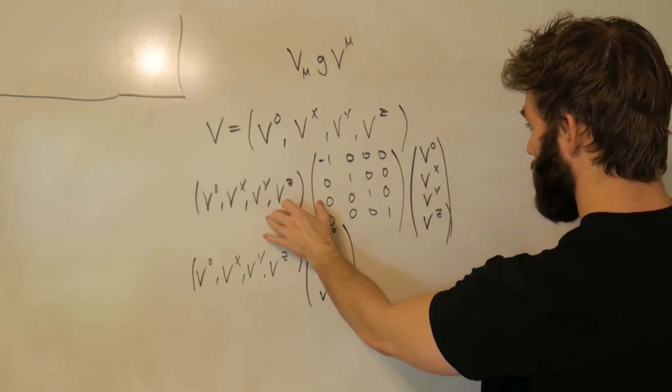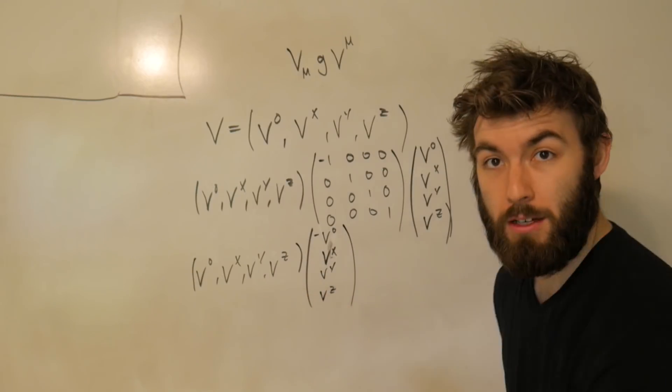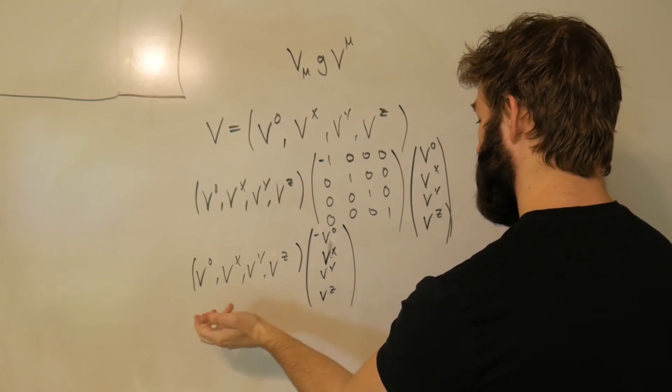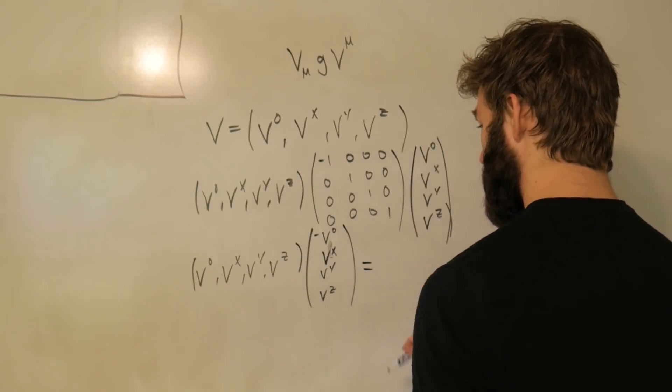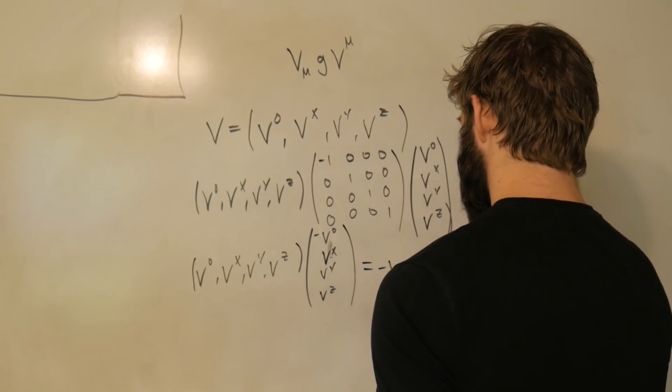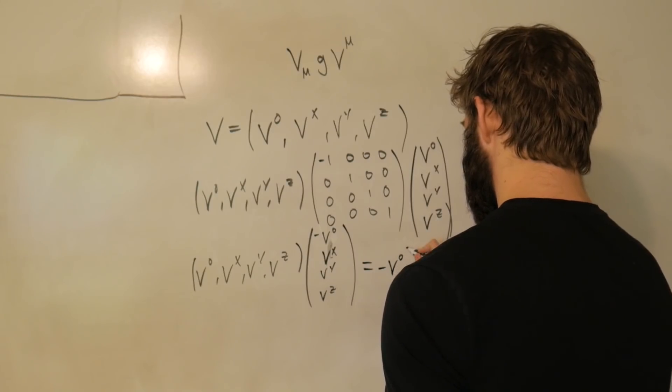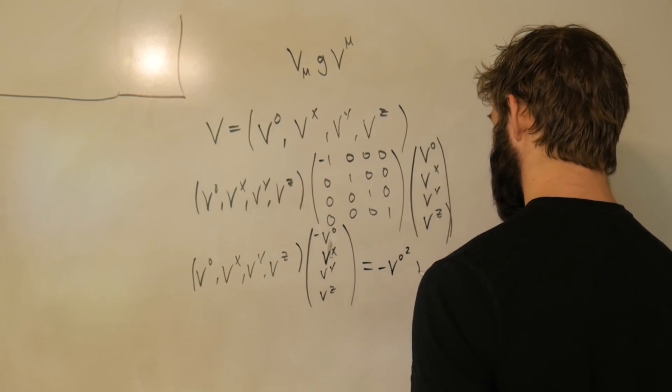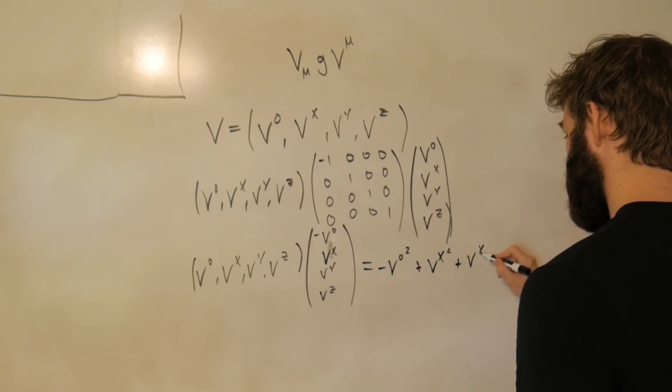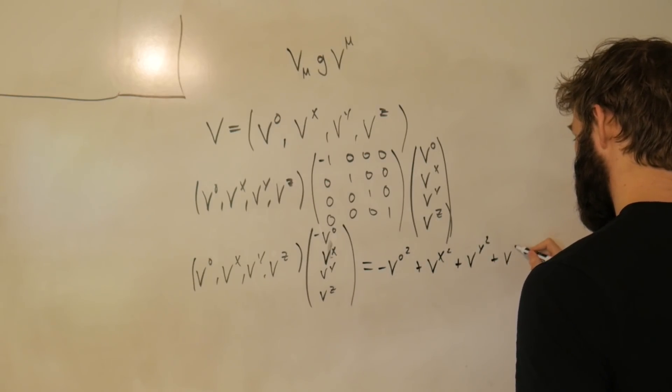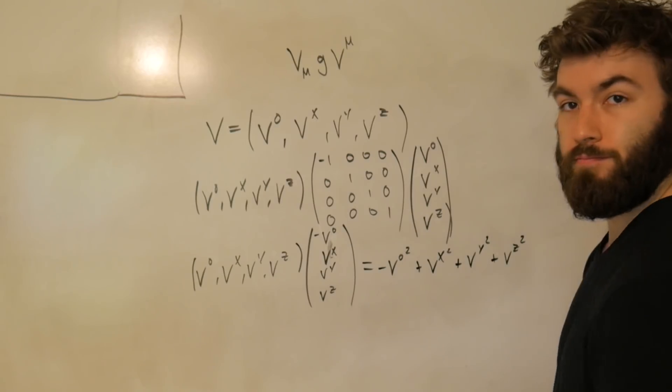So now we've reduced this product of three matrices to a product of two matrices. And now we can just do the exact same thing, but just with one row and one column. And that's going to give us minus v₀ squared, plus vˣ squared, plus vʸ squared, plus vᶻ squared.